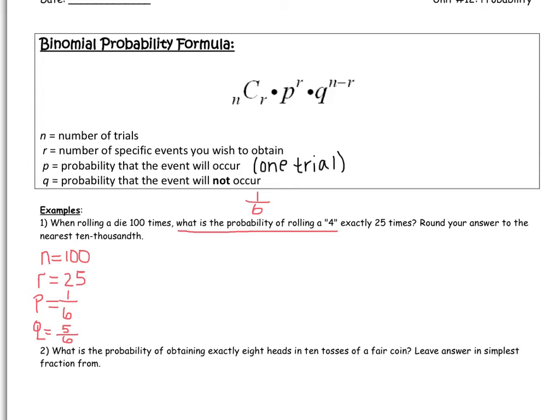So now we're just going to put it all together. So let's write the formula. N, C, R. It might be easier instead of putting the multiplication dot to put parentheses. P to the R, Q to the N minus R. So again, my N is 100. My R is 25. My P is 1 over 6. My R is 25. My Q is 5 over 6. My N is 100. And my R is 25. So now this just becomes a calculator problem. But before we put that in the calculator, let's simplify this, and make it 100 minus 25. So in the calculator, put it in as 75.